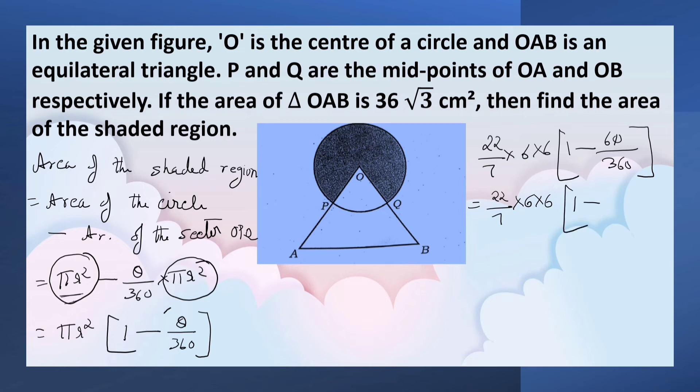Here, 1 minus 1 by 6. That is equal to 22 by 7 into 6 into 6 into, here LCM is 6, 6 minus 1, that is 5. So, this 6 and this 6 can be cancelled.